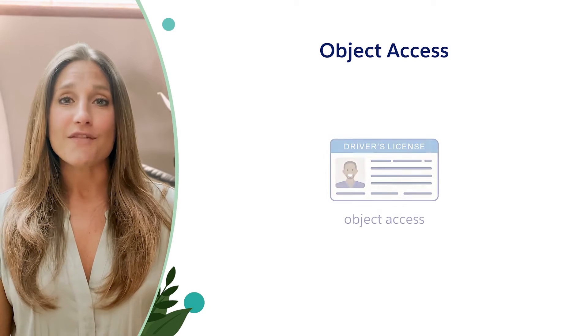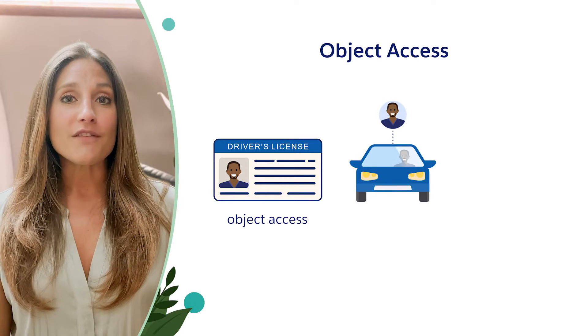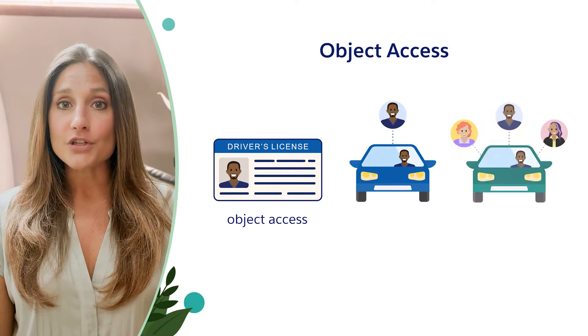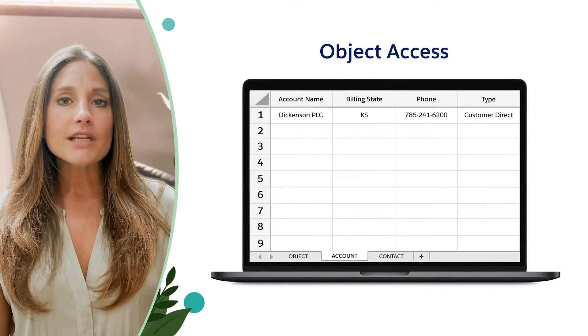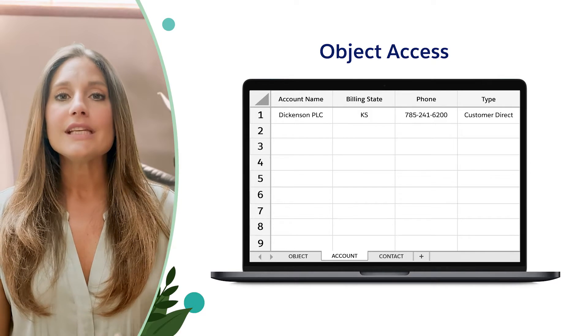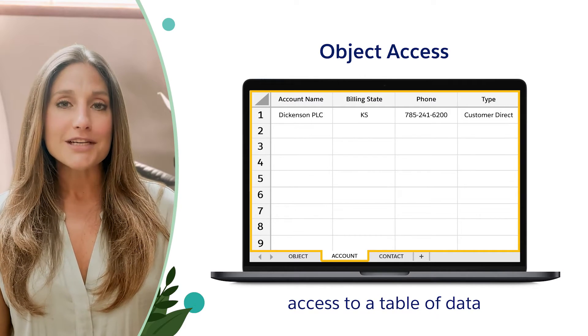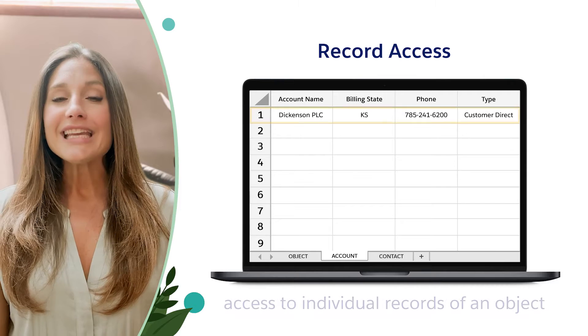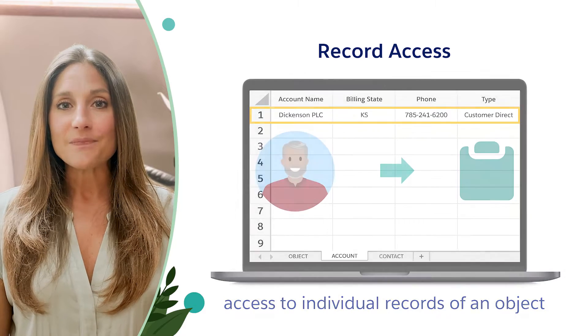Let's first review the difference between object access and record access. Object access is like a driver's license — it gives you permissions to drive a car, but not every car. You can drive your own car or a car that someone has shared to you. If we go back to objects as a table of data, like this spreadsheet, object access gives us access to the table itself. Once a user has access to that table or object, record level access determines which individual records or rows within that spreadsheet users can view and edit.